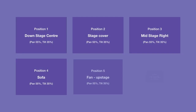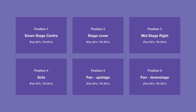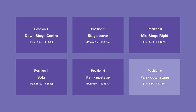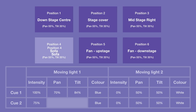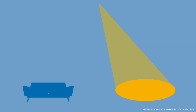Palettes can store key positions, so you can quickly move your lights to those locations. When you use a palette and then record a cue, a reference to the palette is stored within the cue. If you update the palette with a new position, any cue which references that palette will also use the new position.